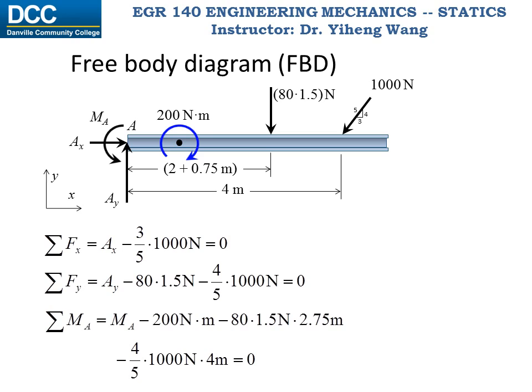The resultant moment about point A equals the unknown couple moment at the wall Ma, minus the free couple moment of 200 Nm, minus the moment caused by the distributed load, minus the moment caused by the vertical component of the 1000 N force, and it equals zero. Now we have three equations and three unknowns, and we can solve for all of them. The solutions all have positive magnitudes, meaning they have the same directions as assumed in the free body diagram. If a calculated result is negative, then it has the opposite direction to what was assumed.